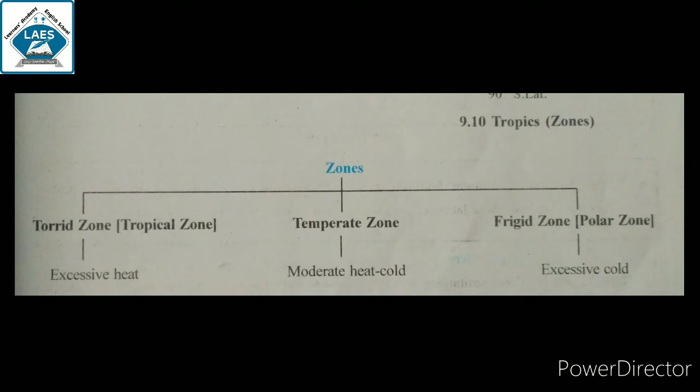Torrid zone का दूसरा नाम है tropical zone — वहाँ excessive heat होती है। Temperate zone में moderate heat and cold होती है — ना ज़्यादा ना कम, दोनों सही चलते रहते हैं। Freezing zone का दूसरा नाम है polar zone — वहाँ excessive cold रहती है।